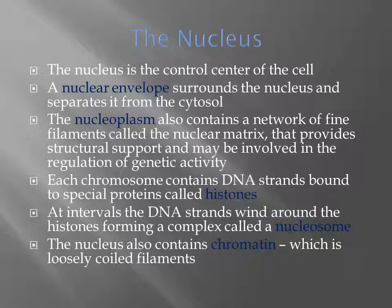The nucleus is the control center of the cell. A nuclear envelope surrounds the nucleus and separates it from the cytosol. The nucleoplasm contains a network of fine filaments called the nuclear matrix, which provides structural support and may regulate genetic activity. Each chromosome contains DNA strands bound to special proteins called histones; at intervals the DNA strands wind around the histones forming a complex called a nucleosome. The nucleus also contains chromatin, which is loosely coiled filaments.